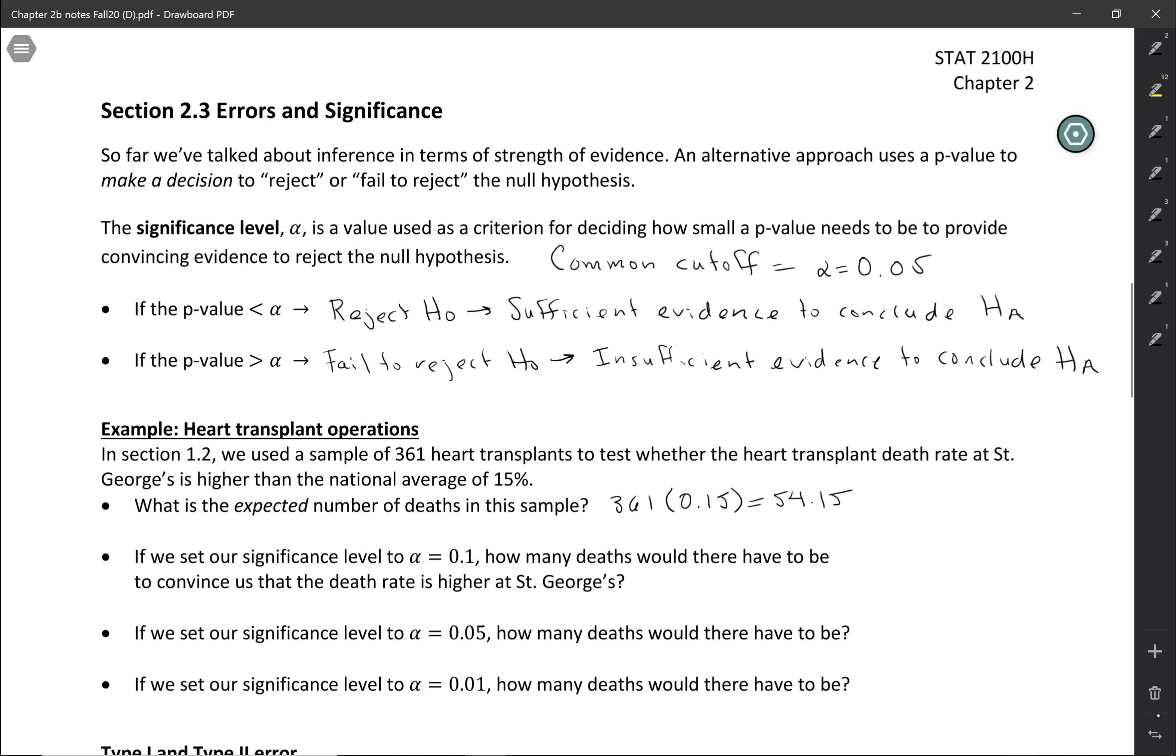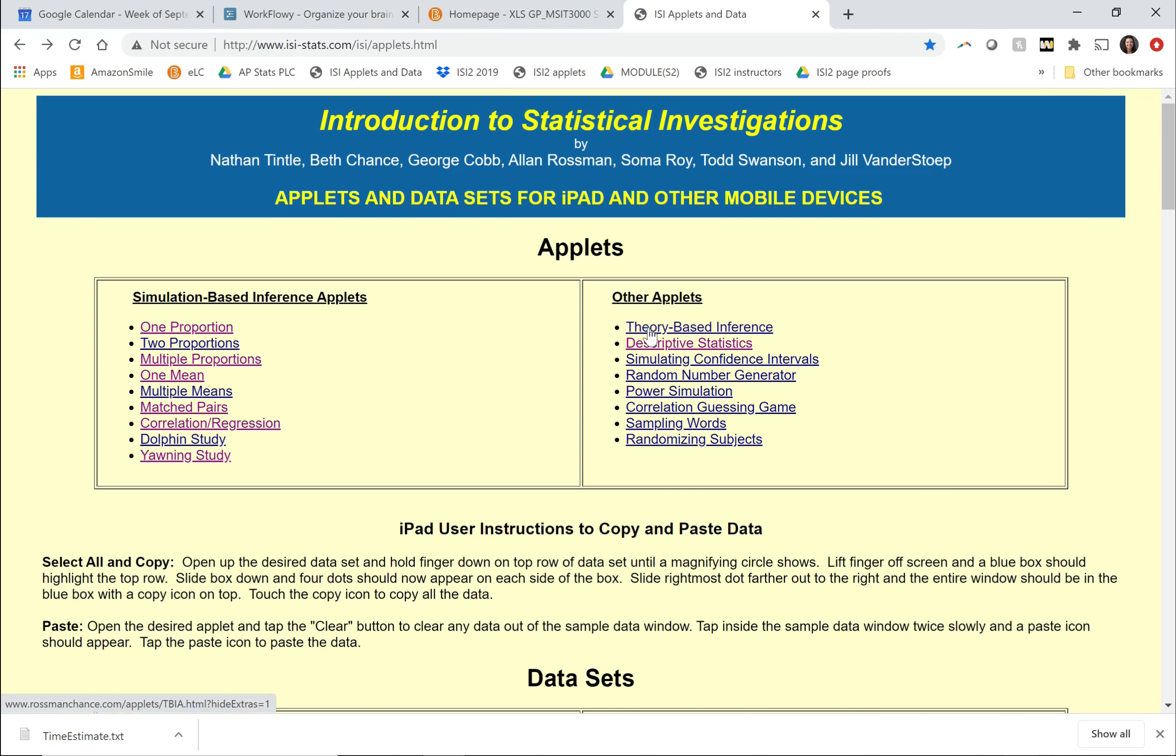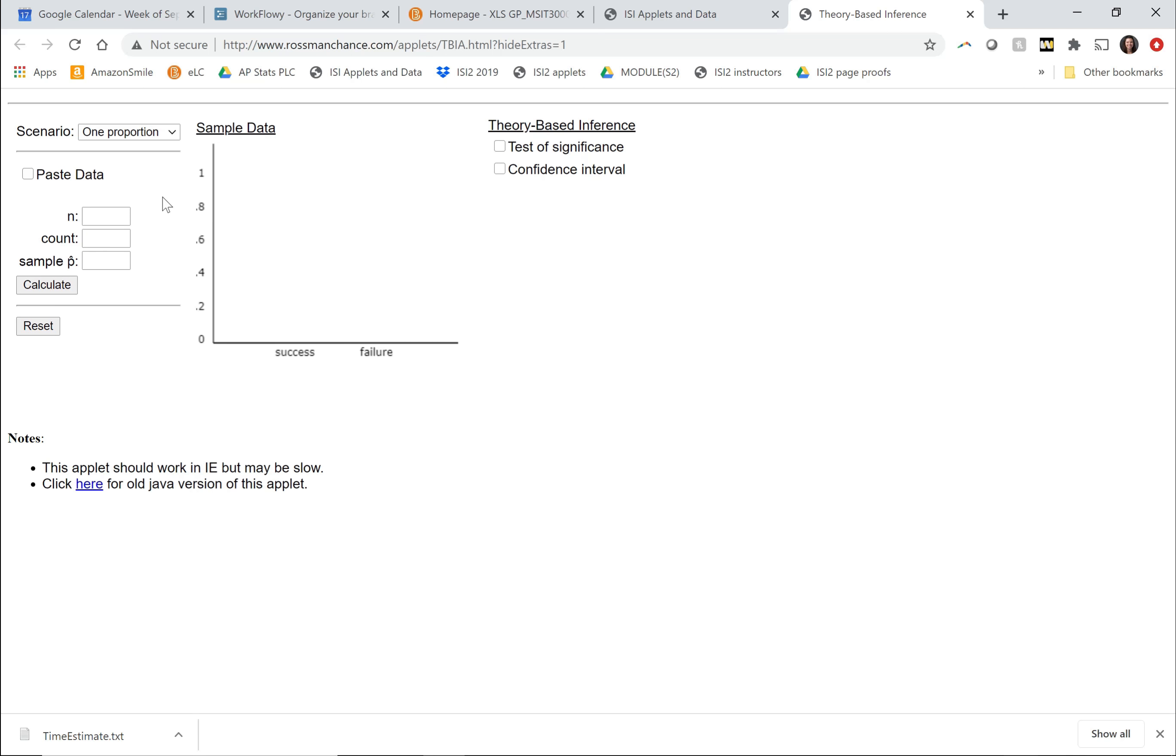So let's say we set our significance level to alpha equals 0.1. How many deaths would there have to be to convince us that the death rate is higher at St. George's? So I'm going to use the theory-based inference applet. And notice that we're back to talking about proportions. Either the patient lives or they don't. And so that's categorical data. We would summarize that with proportions. We're talking about 361 transplants. So that would be our sample size.